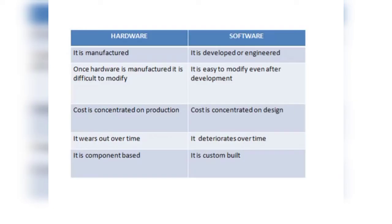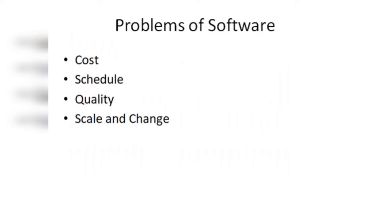There are certain problems with respect to software. The first is cost — आपको software बनाना है तो पहले से budget decide करना पड़ता है और पूरा काम within that budget ही करना होता है। The next problem is schedule — software delivery हमेशा within time होती है, deadlines को follow करती है। Project start करने से पहले schedule बनाना पड़ता है और throughout the time उस schedule को follow करना पड़ता है — यह schedule बनाना और maintain करना is a tedious task.